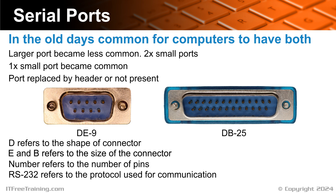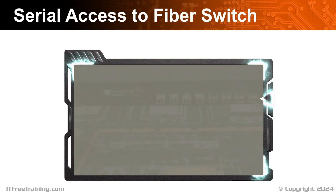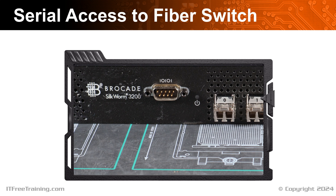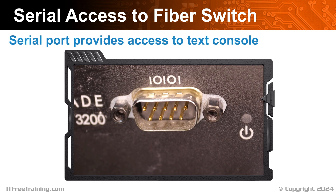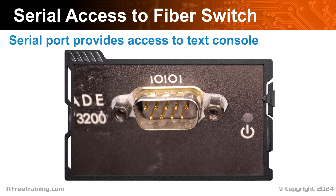There are USB to serial port adapters on the market. Therefore, if you need to access one nowadays, the simplest and easiest way is often to purchase a USB to serial port adapter. Let's have a look at an example of when you may use a serial port to get an idea of how it would work. This is an old silkworm fiber switch that has a serial port on the front. You generally find nowadays that if a device has a console port, it will probably use an RJ45 port or a USB port rather than a serial port like this one. Regardless of which port the device has, it will act as a serial port to access the text console of the device.